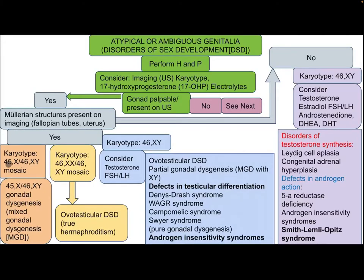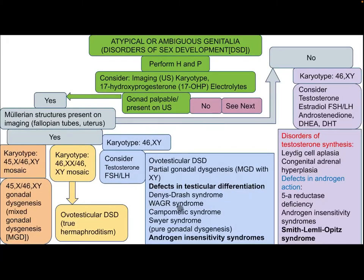If the karyotype is 45X/46XY mosaic, the differential diagnosis includes 45X/46XY gonadal dysgenesis and mixed gonadal dysgenesis. If the karyotype is 46XX/46XY mosaic, consider ovotesticular DSD — true hermaphroditism. If the karyotype is 46XY, consider testosterone and FSH/LH ratio; differential diagnosis includes testicular DSD, partial gonadal dysgenesis, mixed gonadal dysgenesis with XY, defects in testicular differentiation such as Denys-Drash syndrome, Frasier syndrome, Campomelic syndrome, Swyer syndrome, pure gonadal dysgenesis, and androgen insensitivity syndrome.